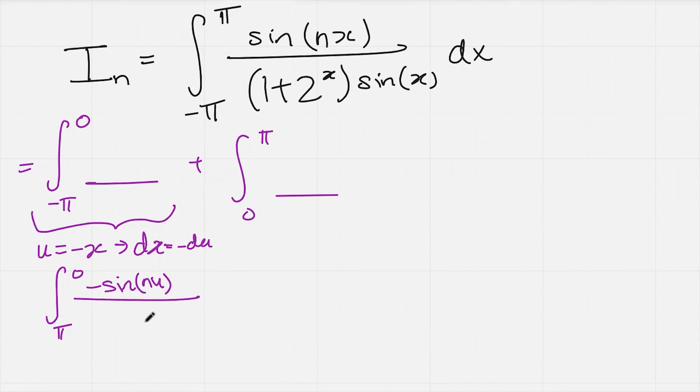And then divide it by 1 plus 2 to the x is 1 plus 2 to the minus u. And then sine of x is sine of minus u. But again, because sine is odd, I can bring the minus sign to the front and just have sine of u. And then dx is just, as we see, minus du.